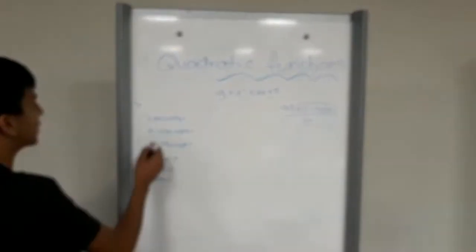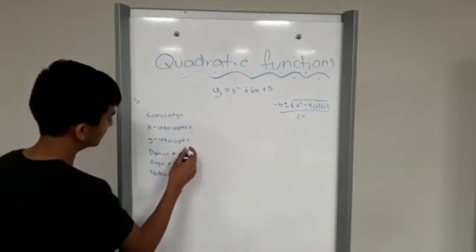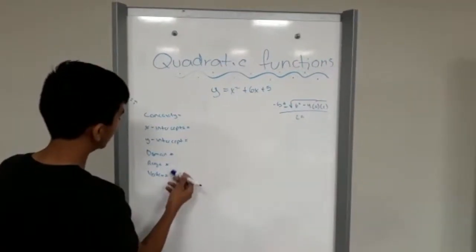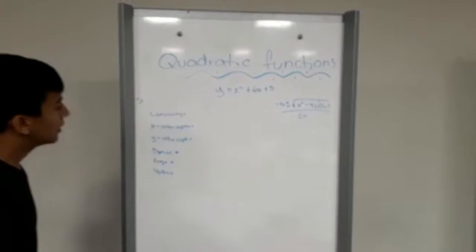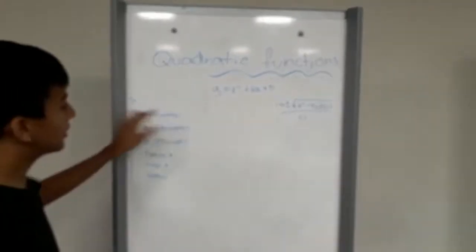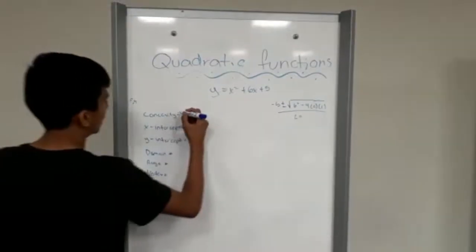We need to take up the concavity, x-intercept, y-intercept, domain, range, and vertex. The concavity — because it is positive — it will be upward.